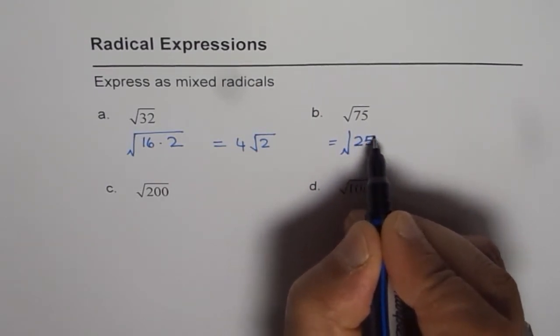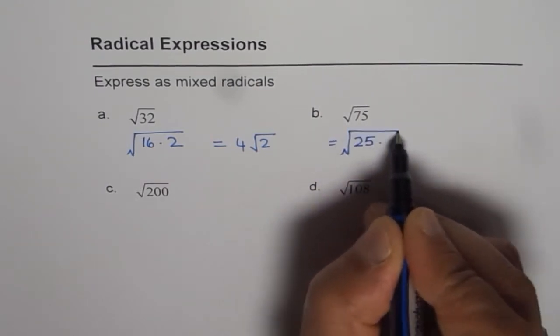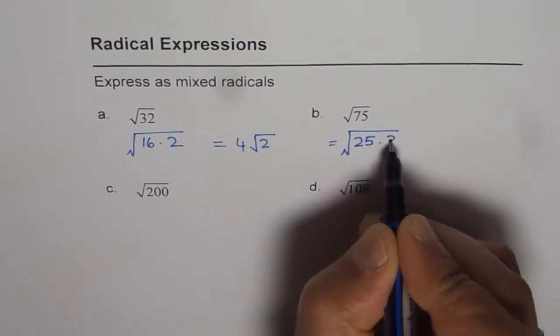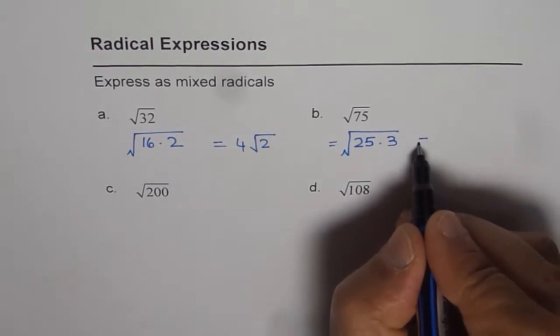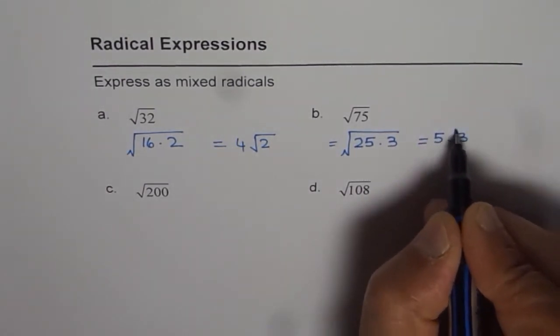25 is a perfect square. That is why we chose 25. 25 into 3 is 75. Square root of 25 is 5. So we get 5 square root of 3.